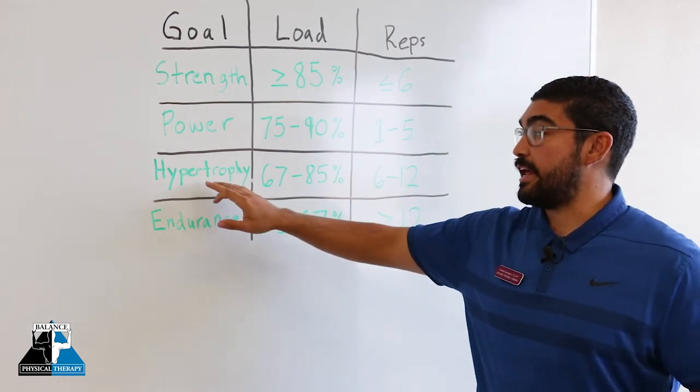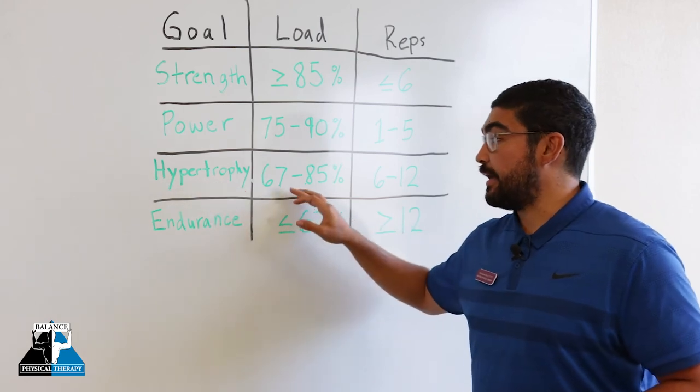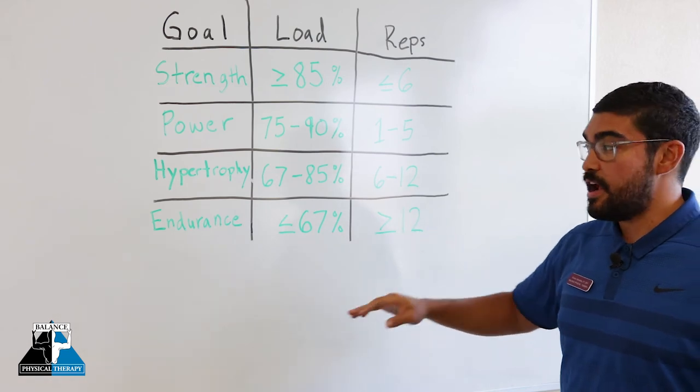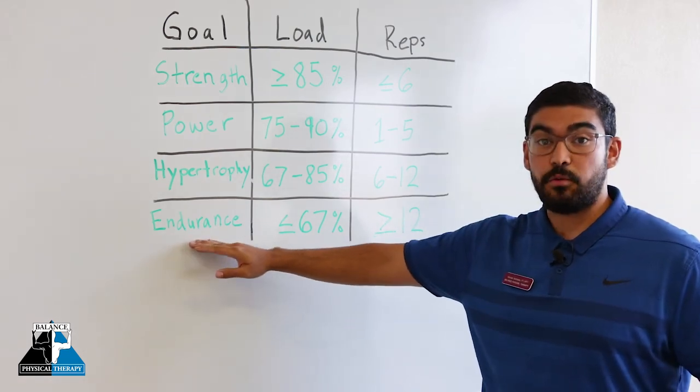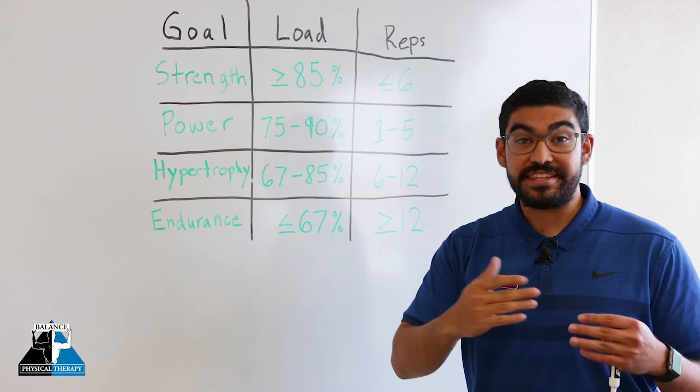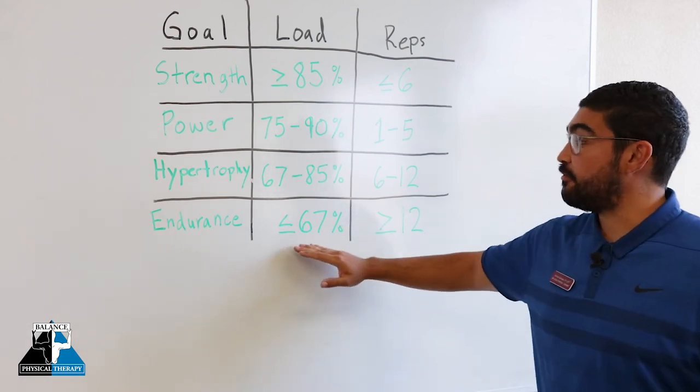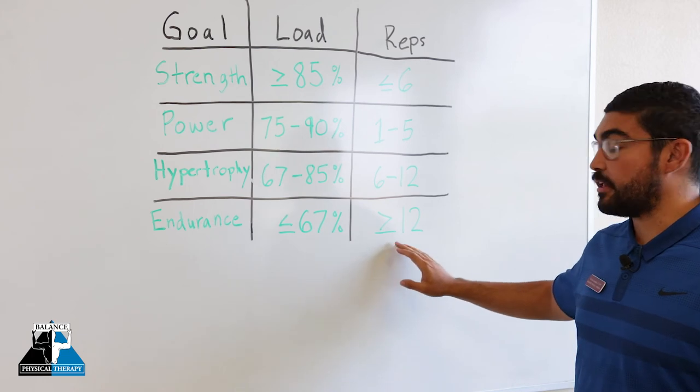Next, we're going to be looking at hypertrophy, which is going to be a pretty low load. But as you can see, the repetitions are starting to rise. And then endurance is something that we need for being able to withstand activity for a prolonged period of time. That's going to be a very low load, but we're going to be doing it lots of times.